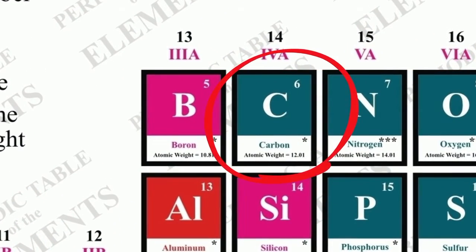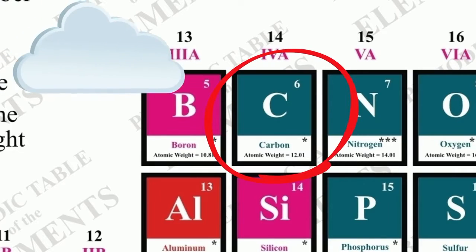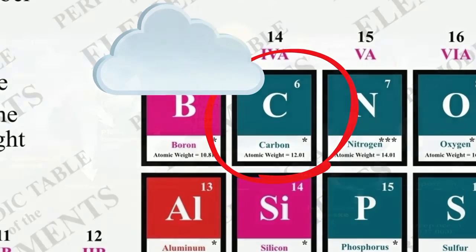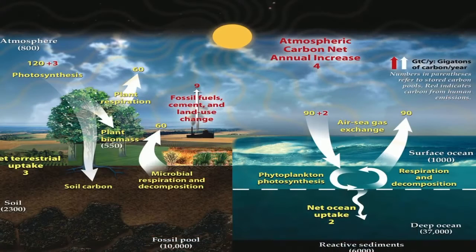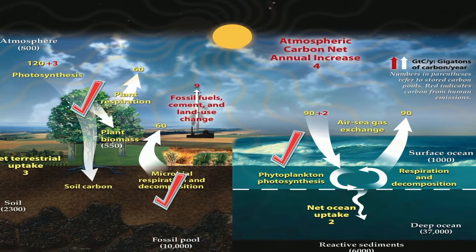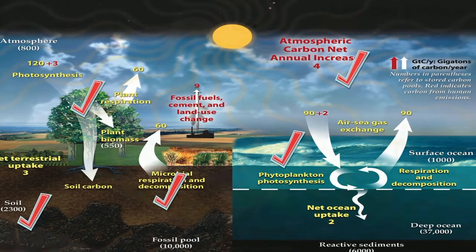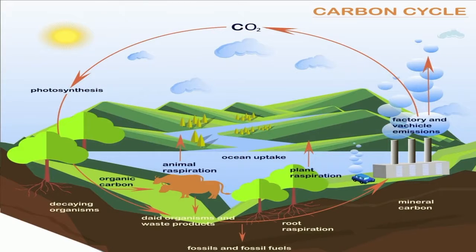Carbon is also a key component of our atmosphere. It has the ability to cycle through our Earth, the ocean, living factors, abiotic factors, and the air. Carbon recycles among five major locations.